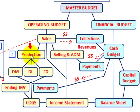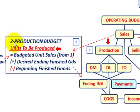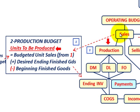So let's look at this production budget. This is really the second budget that we're developing for our operating budget. What we're doing here is determining the units that have to be produced for the period. We start out with the budgeted unit sales from our sales budget — we have to know what our sales budget has for the units to produce for the period. The sales budget has to be developed first.